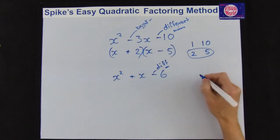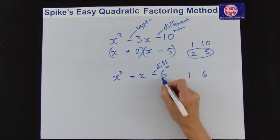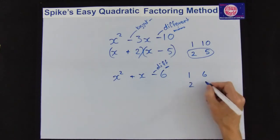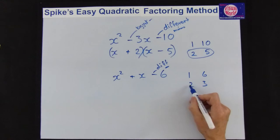Get into the factors for 6, 1 and 6, or the other possibility is 2 times 3. So we want a difference of 1. Has 1 and 6 got a difference of 1? Nope. But 3 minus 2 gives you 1, so that must be your answers.